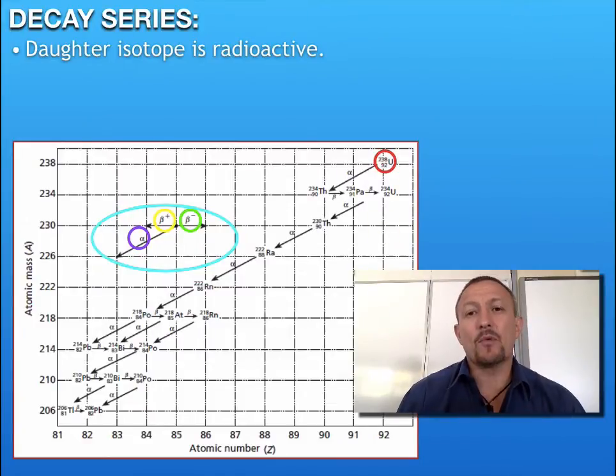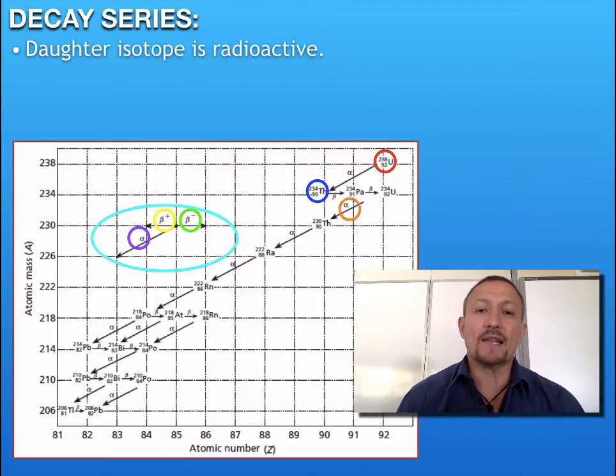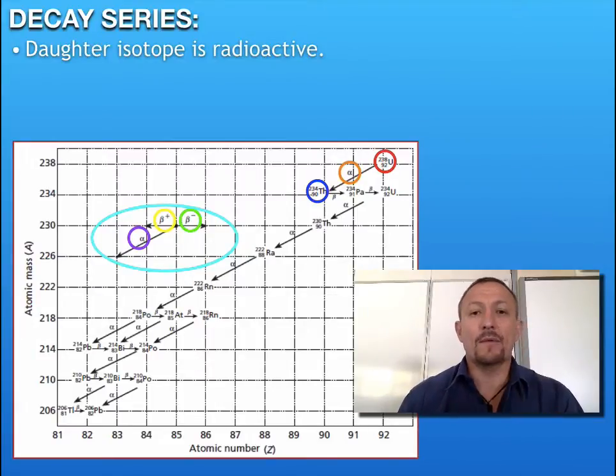For example, we've got uranium-238 at the top here, and it breaks down initially to thorium-234, shown in the blue arrow. It does that by releasing an alpha particle. So we have uranium-238 goes to produce thorium-234 plus an alpha particle.